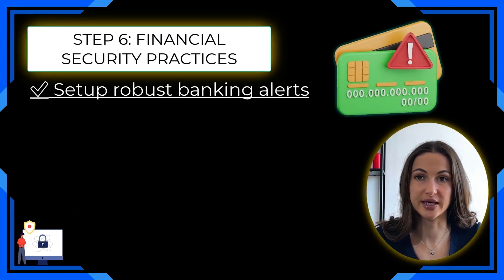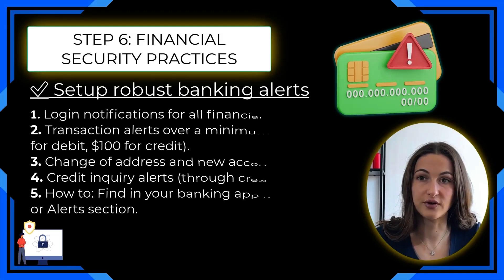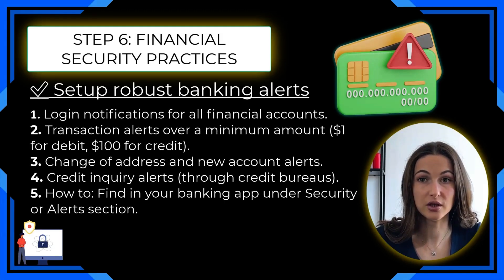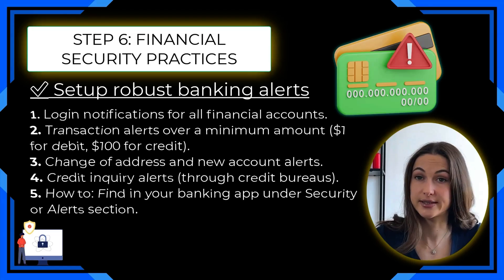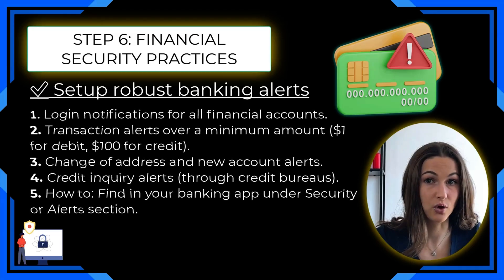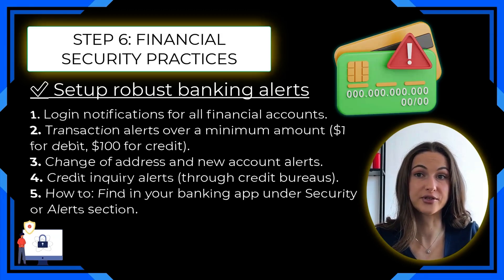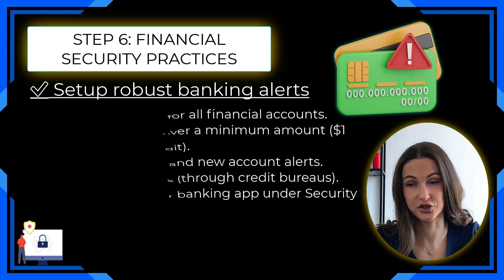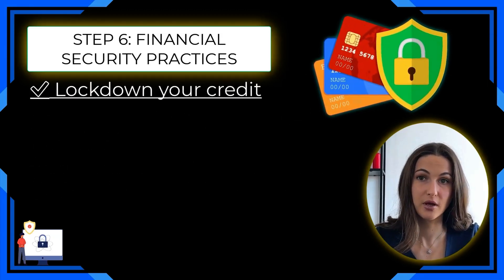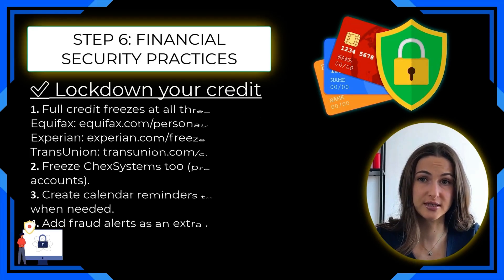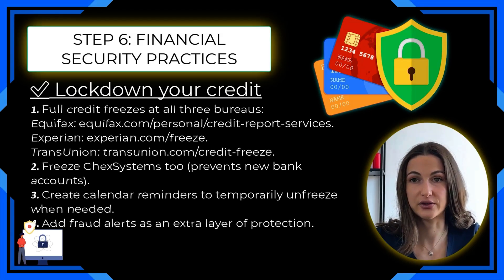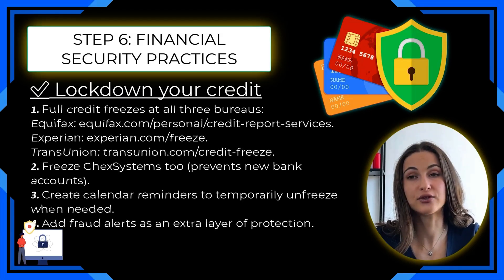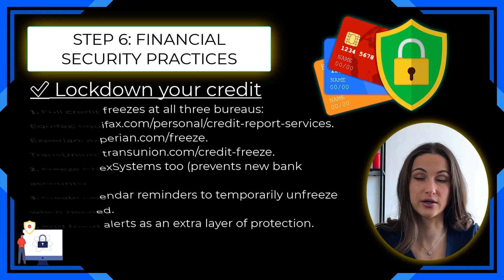Next, set up robust banking alerts: login notifications for all financial accounts, transaction alerts above a minimum amount, change-of-address and new-account alerts, and credit inquiry alerts through credit bureaus — find these in your banking app under the security or alerts section. Next, lock down your credit by requesting full credit freezes at all three bureaus: Equifax, Experian, and TransUnion. Create calendar reminders to temporarily unfreeze when needed, and add fraud alerts as an extra layer of protection.